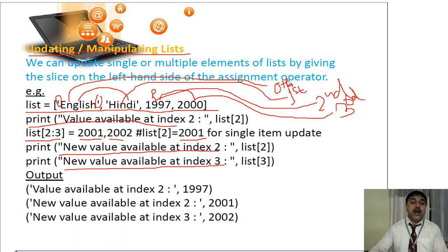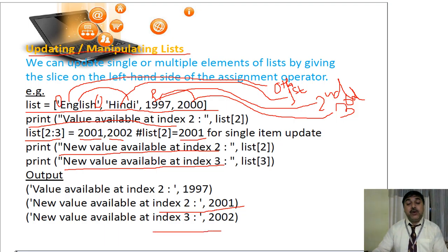Each of the variables has a positional address. Now what I have done is inserted some values there. When I inserted some values, the value position has been changed. Now the new value for index 2 is 2001, and for index 3, the new value that has been entered is 2002. This is how the updating works.